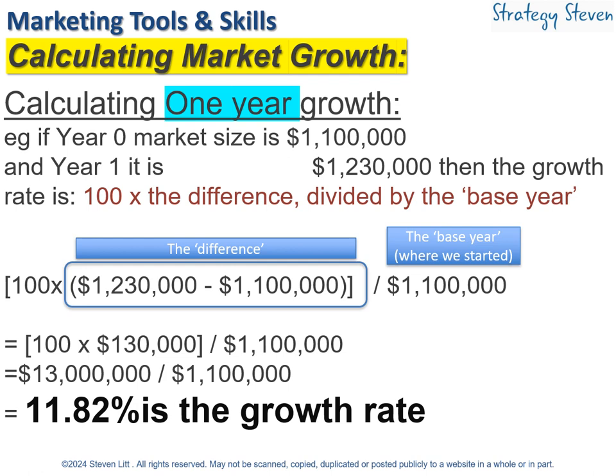Right now you're at 1.1 million. So what's the difference? 1.23 minus 1.1. Multiply that by 100 and then divide by the base year sales of 1.1 million. You will end up with 11.8% as your growth rate — pretty simple.